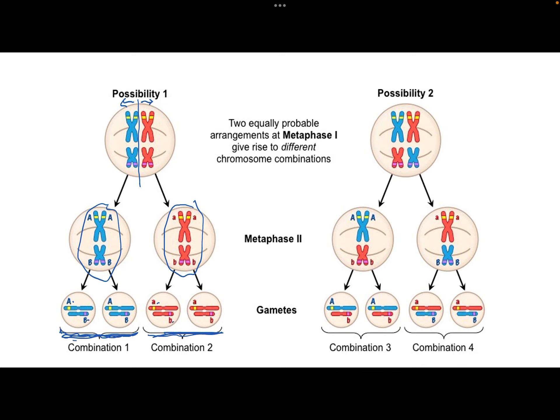But if these chromosomes line up the other way — with the maternal chromosome on the left and the paternal chromosome on the right for the first chromosome, and the other way around for the second chromosome — then after meiosis I, each of our cells has one maternal and one paternal chromosome. The one on the left has maternal chromosome A and paternal chromosome B, and the one on the right has paternal chromosome A and maternal chromosome B. So we have two additional combinations of gametes.